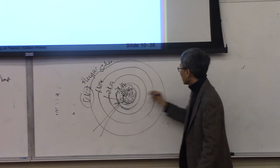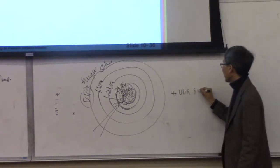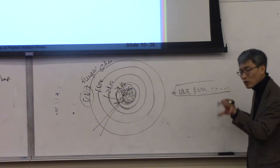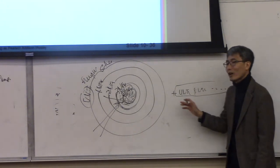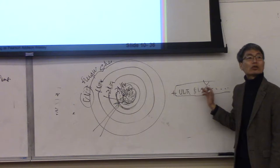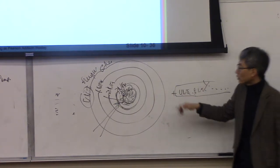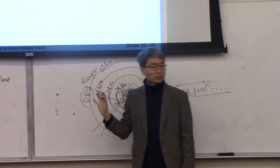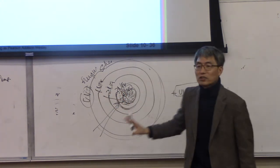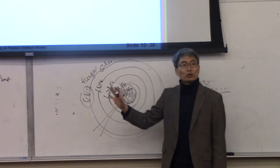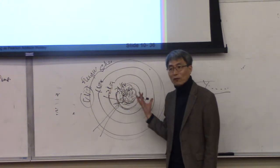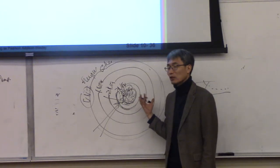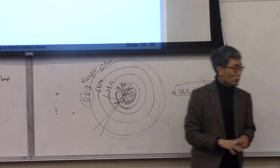There are more normal forms — fourth NF, fifth NF — which are very specialized cases like multivalued dependencies. In case you need them, you can check those. Today we're going to see that normalization is not very complicated. Within a minute I'll explain everything. Even if you haven't been paying attention so far, pay attention for the next minute for your final exam.